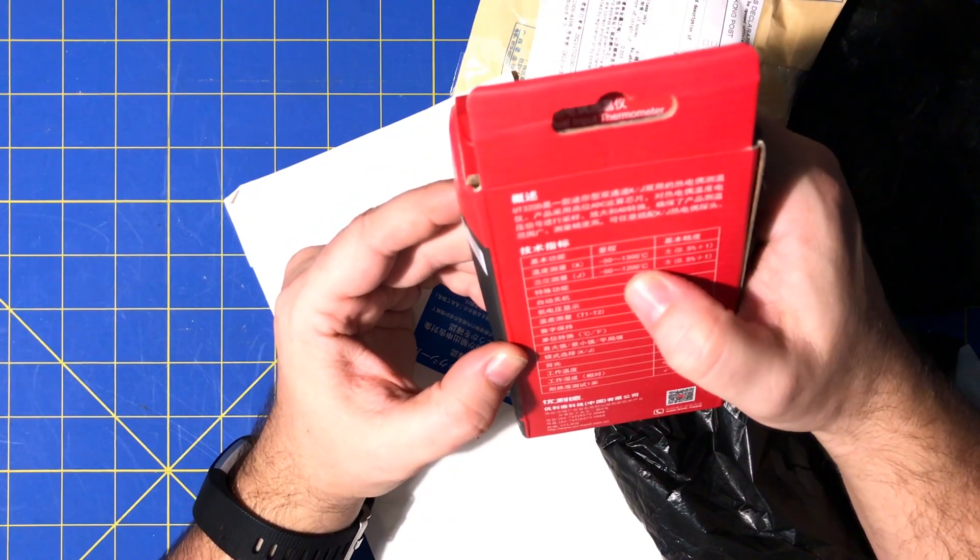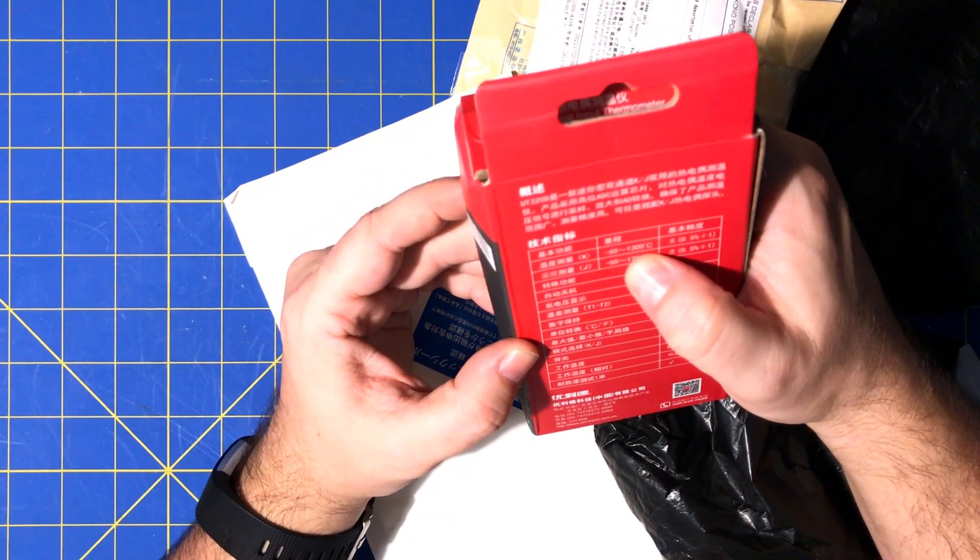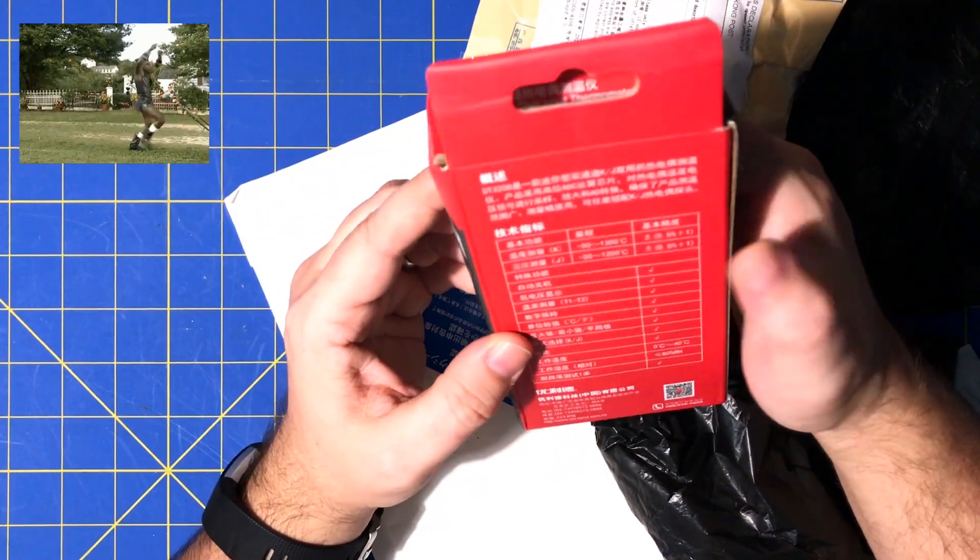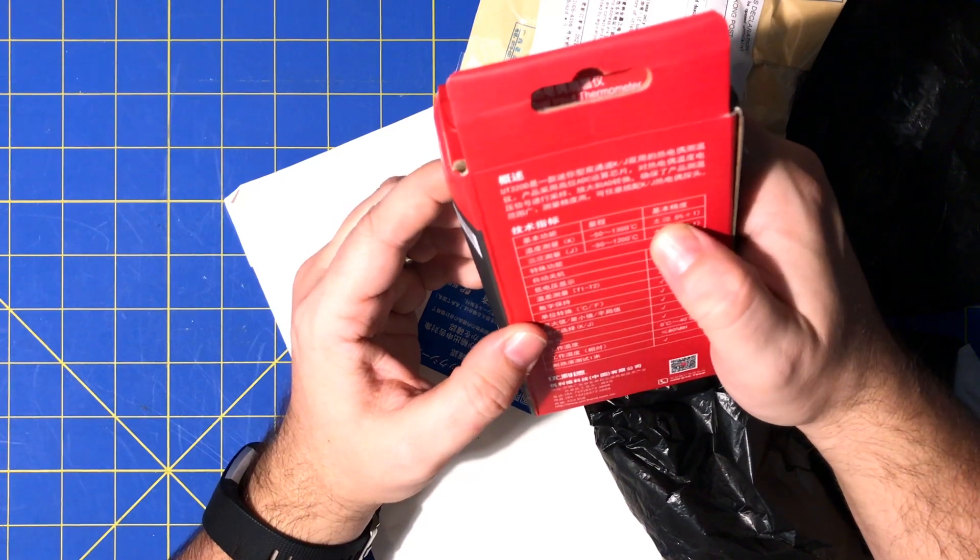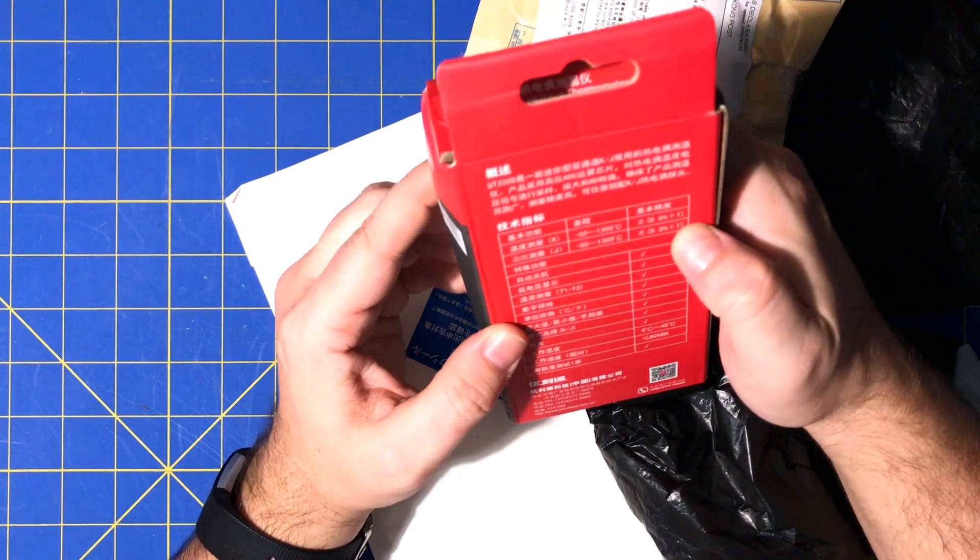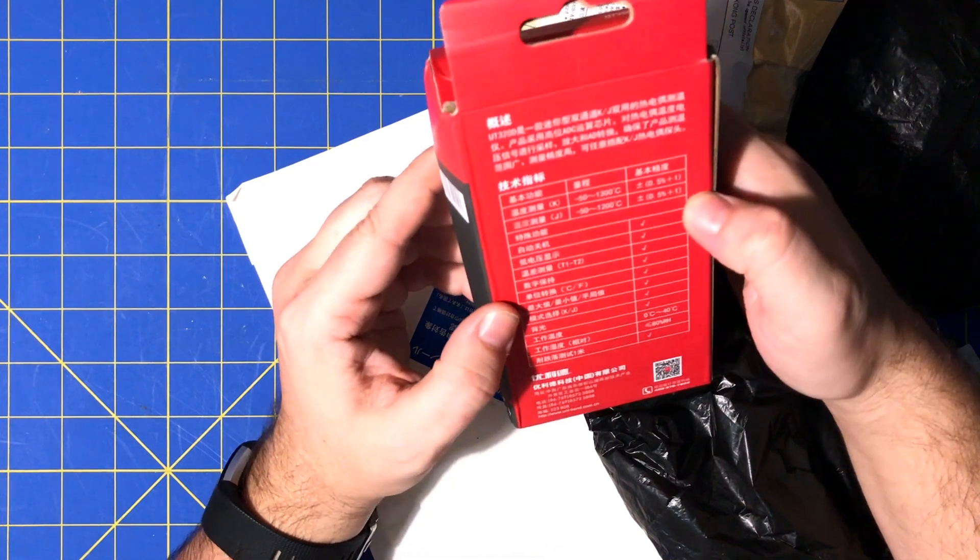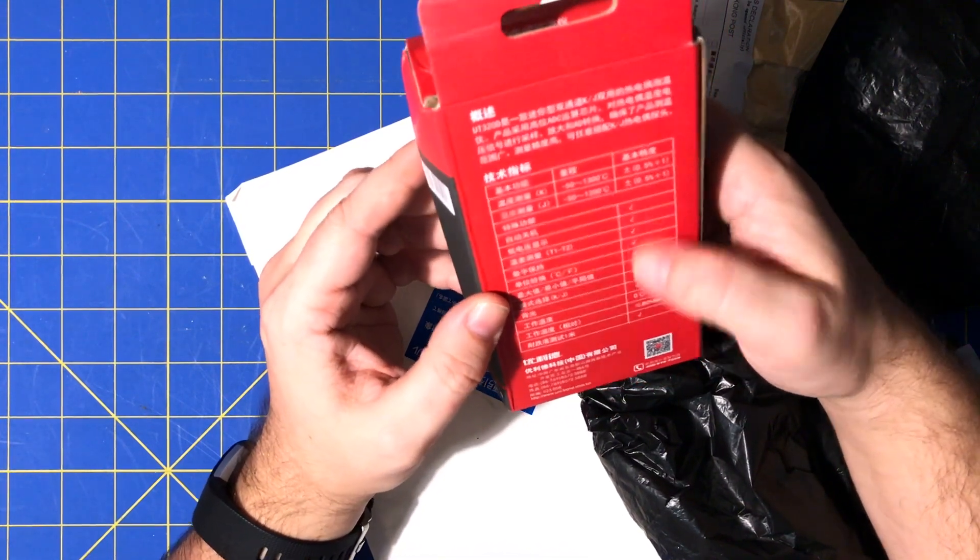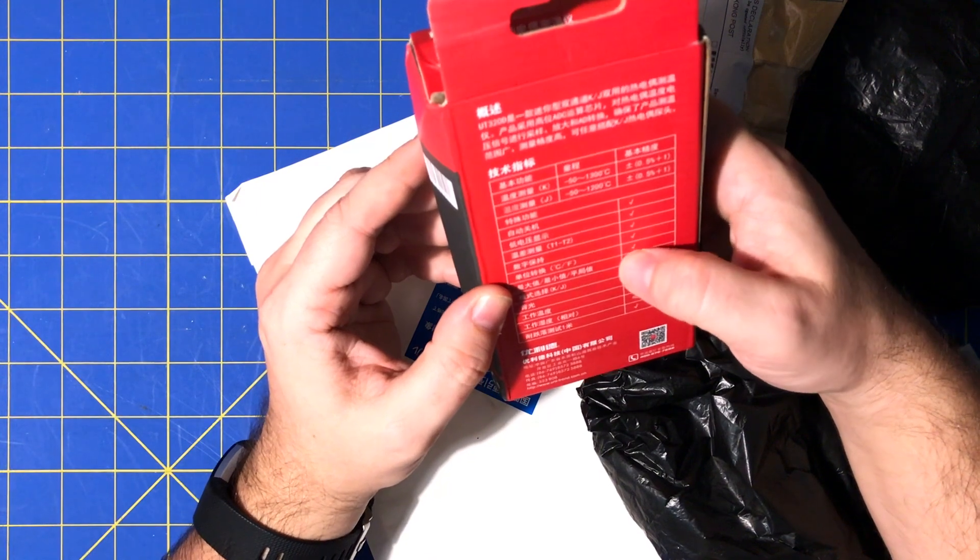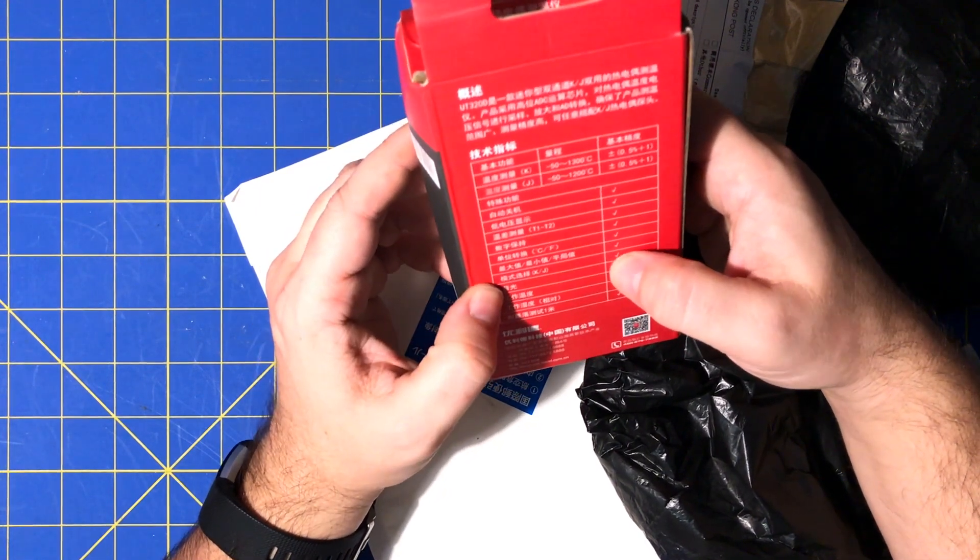The accuracy for k is 50 through 1300 degrees C. They call these contact thermometers or contact probe thermometers - plus or minus 0.5% plus one. It's about the same for j type up to 1200. It has differential, C or F, k or j options.